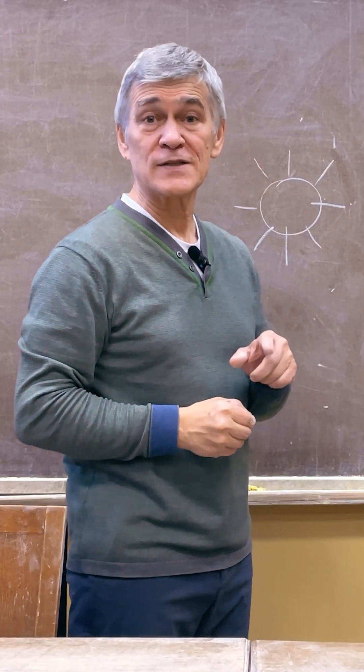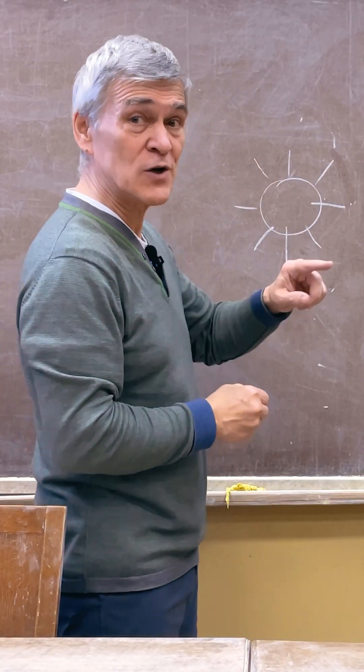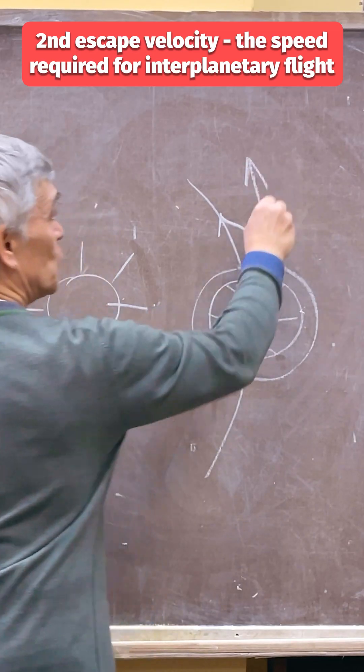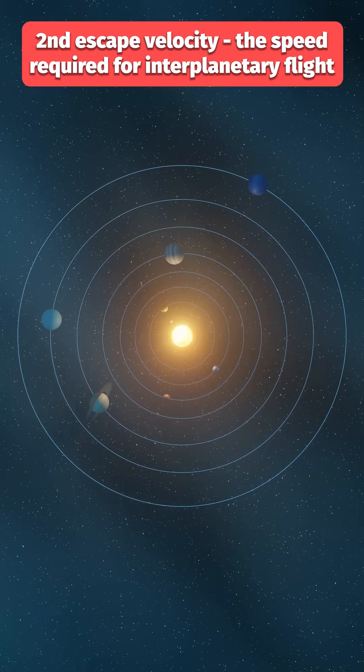The second cosmic speed is the speed at which a rocket takes off from Earth and can leave it and fly to some other planet, but within the limits of the solar system.